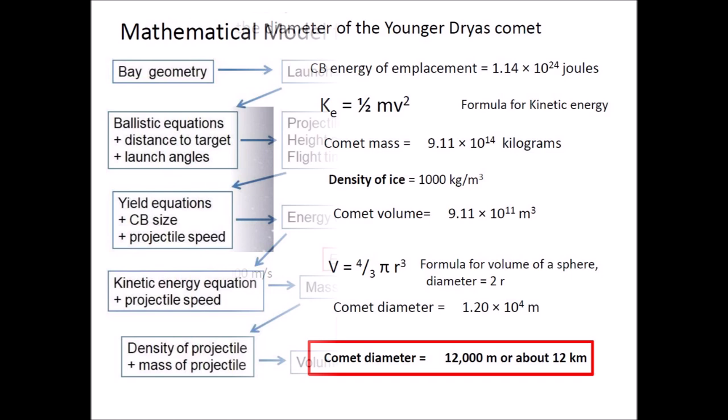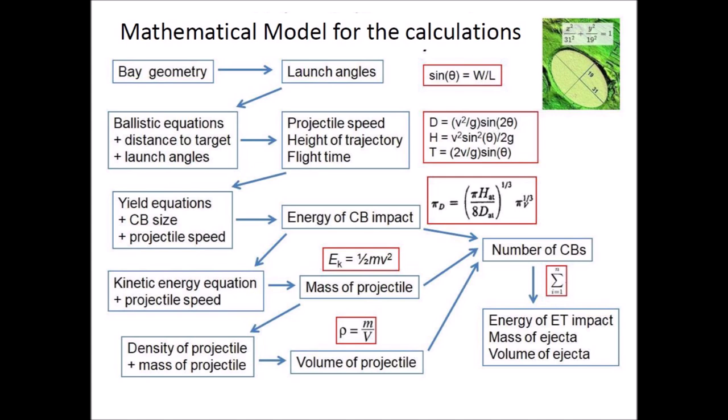It is assumed that the Carolina Bays were made by secondary impacts of glacier ice ejected by a comet impact on the Laurentide Ice Sheet. The mathematical model uses the bay geometry to calculate the launch angles. Ballistic equations provide the projectile speed, and yield equations correlate the size of the Carolina Bays to the energy of the ice projectiles.